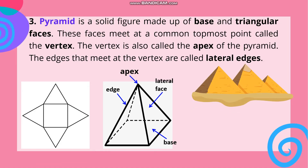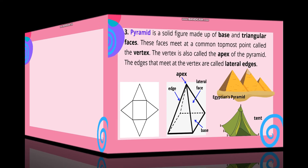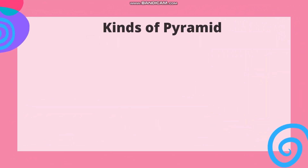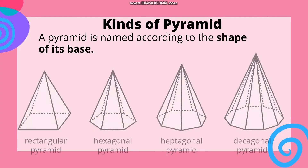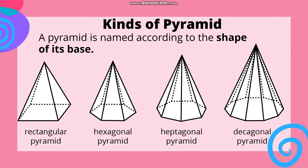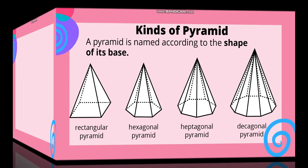These are examples of pyramid: Egyptian pyramid and tent. Kinds of pyramid: A pyramid is named according to the shape of its base. Tulad sa prism, ang pangalan o uri ng pyramid ay nakadepende sa shape ng base nito. Examples: rectangular pyramid, hexagonal pyramid, heptagonal pyramid, and decagonal pyramid.